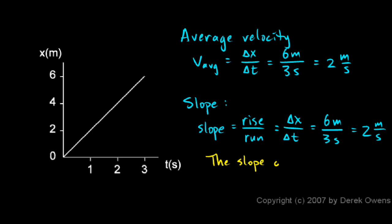And that leads us to this important point. The slope of an x versus t graph is the velocity. So if we have a graph of an object's position over time, the slope of that graph will be the velocity.